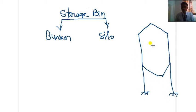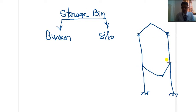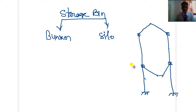If we talk about the components, there are five main components. First is side wall, second is hopper bottom, third is edge beam, fourth is column, and fifth is footing. These are the basic components of a storage bin.